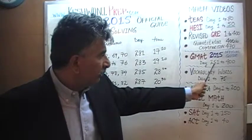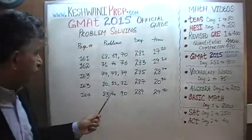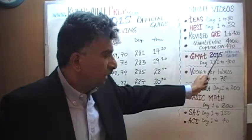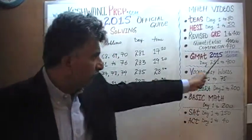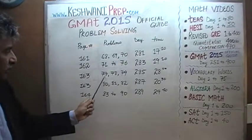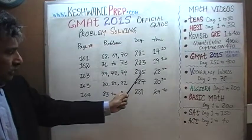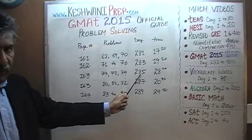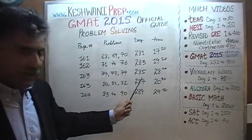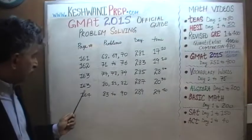Solutions to all the problems are presented from day number 251 through 400 — you will find them there, from 251 to 400, for the 2015 Official Guide. Next, on page number 163, we did problem numbers 77, 78, and 79 on day number 285. Just type in "GMAT math day 285" and the video will pop right up.